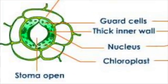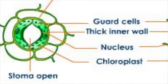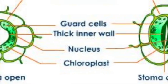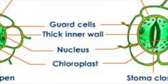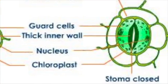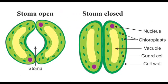Abscisic acid signals the guard cells of the plant to close the stomata. The guard cells lose solutes, which removes pressure from them, and as a result the stomata closes.